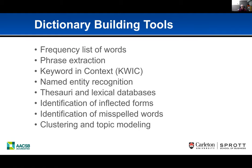The toolkit includes: word frequency lists; phrase extraction — a key tool for disambiguation; keyword in context (KWIC), a powerful tool built into Wordstat that helps with disambiguation during dictionary construction; named entity recognition; sources and lexical databases; identification of inflected forms and misspellings; and clustering and topic modeling, which can help even in the semi-automatic approach to get an initial cut at categories. These are the tools we'll touch on throughout the presentation.